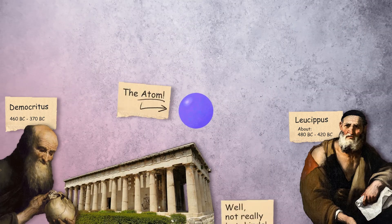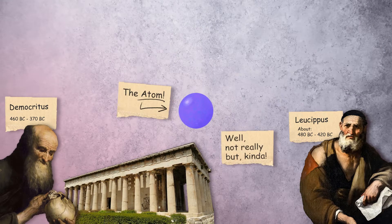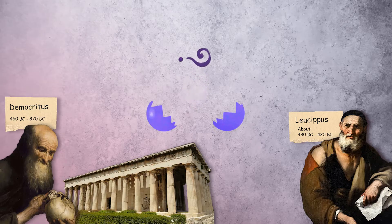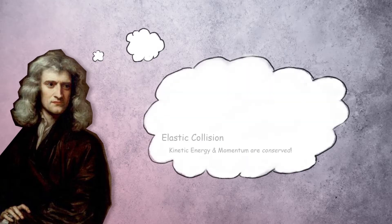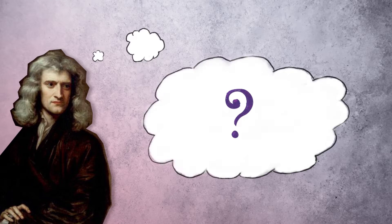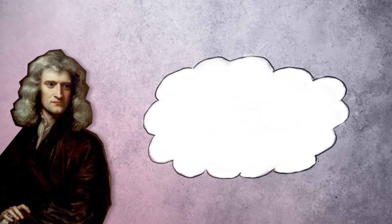Before the start of the 20th century, very little was known about the internal structure of the atom. In the days of Newton, atoms were thought of as minute indestructible spheres that underwent elastic collisions, but when it was revealed that atoms had an electrical nature to them, new models had to be dreamt up.